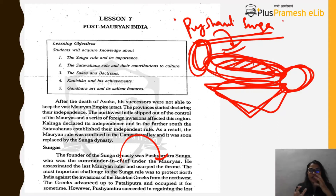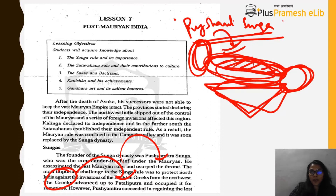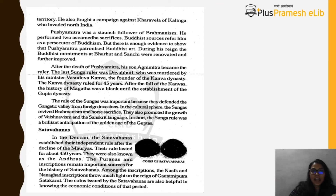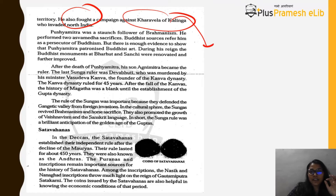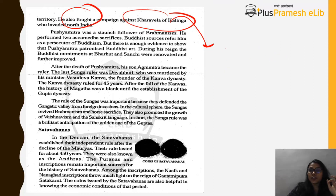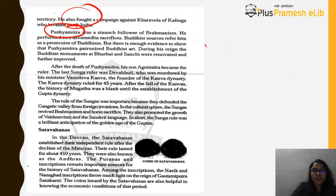The major threat came from the northwest — Bactrians, Greeks, Huns, and others. The Greeks advanced up to Pataliputra and occupied it for some time, but Pushyamitra succeeded in regaining lost territory. He also fought a campaign against Kharavela of Kalinga, whose Hathigumpha caves contained inscriptions about the Mauryan empire.